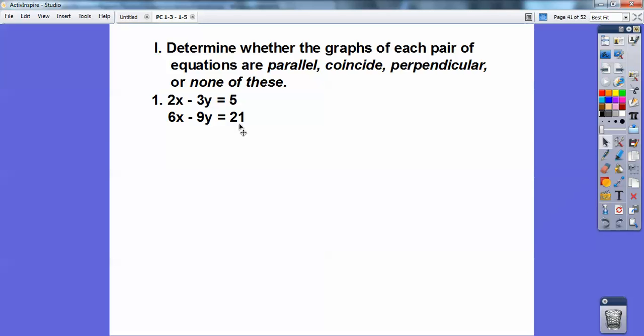If it would have been, say this would have been 15, then they would have been the exact same line and they would have been coinciding with each other. But these guys are parallel because they both have slope 2/3. So parallel.